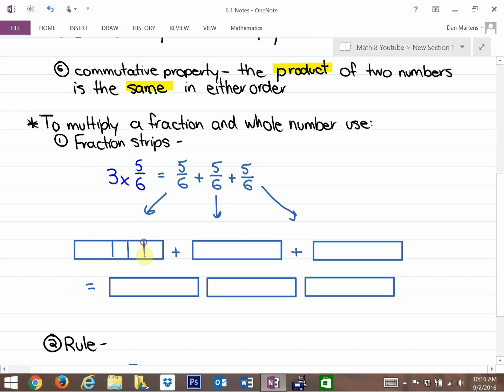If you need to look at the diagram of this, here's what it would look like. We could shade in. First of all, I'm breaking these all up into six parts because the denominator is how many parts to break each whole into. And then I'm going to take my highlighter. 3 times 5 sixths can look like this. Here's 5 sixths, shaded in 5 out of 6 parts. Here's another 5 sixths, and here's another 5 sixths.